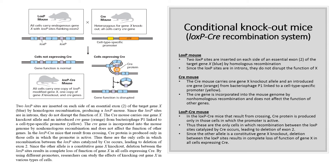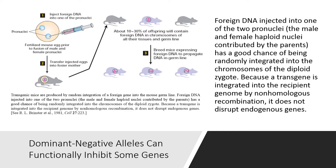By using different promoters, researchers can study the effects of knocking out gene X in various types of cells. For certain genes, the difficulties in producing homozygous knockout mutants can be avoided by use of an allele carrying a dominant negative mutation. These alleles are genetically dominant — that is, they produce a mutant phenotype even in cells carrying a wild-type copy of the gene. But unlike other types of dominant alleles, dominant negative alleles produce a phenotype equivalent to that of a loss-of-function mutation. Useful dominant negative alleles have been identified for a variety of genes and can be introduced into cultured cells by transfection or into the germ line of mice or other organisms. In both cases, the introduced gene is integrated into the genome by non-homologous recombination. Such randomly inserted genes are called transgenes, and the cells or organisms carrying them are referred to as transgenic.